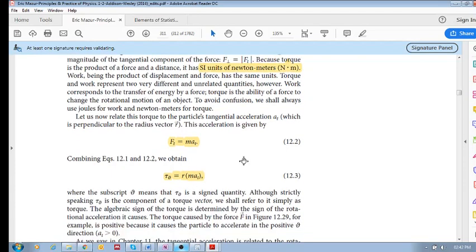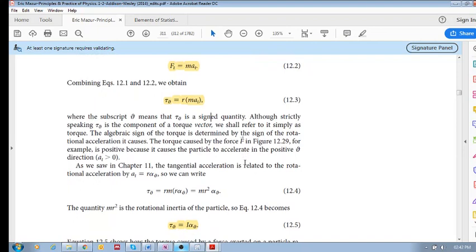So just stick with me here. We're going to get to something quite interesting. And we know that the tangential acceleration is also given by R alpha. Remember, alpha is the rotational acceleration and A T is the tangential acceleration. And these two are related by R, by the radius.